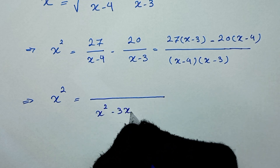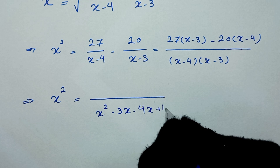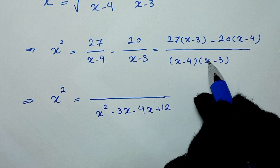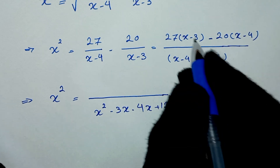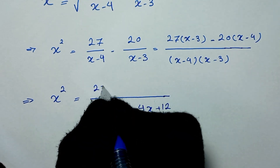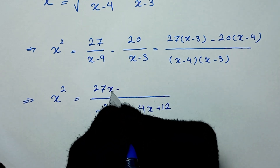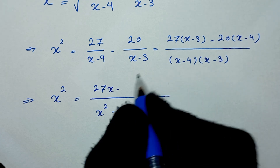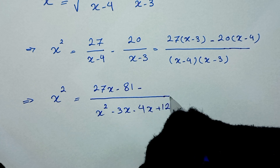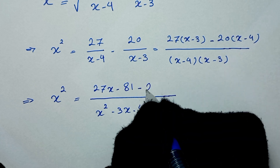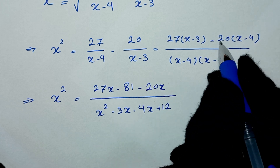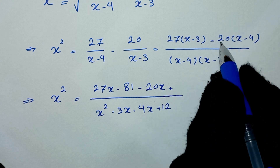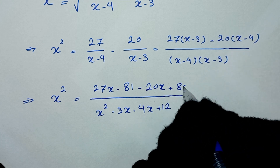Expanding the denominator: x minus 4 times x minus 3 gives x squared minus 3x minus 4x plus 12. For the numerator: 27 times x minus 3 gives 27x minus 81, and negative 20 times x minus 4 gives negative 20x plus 80.